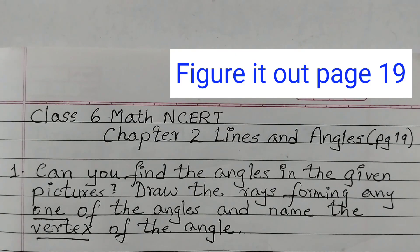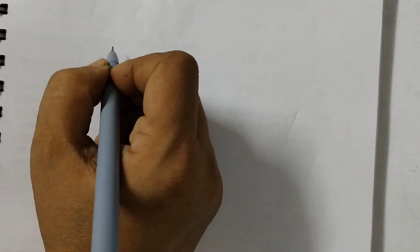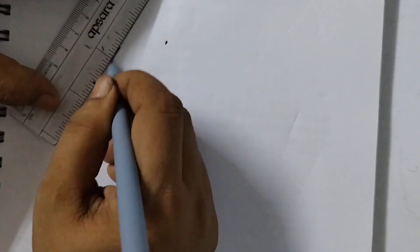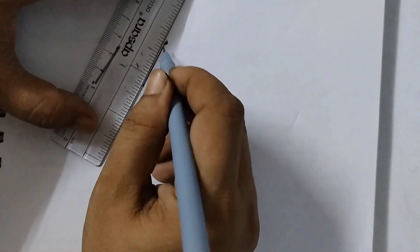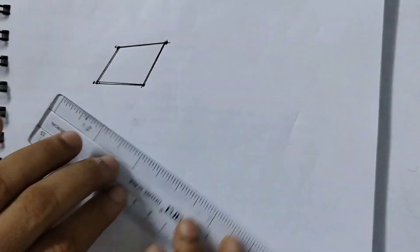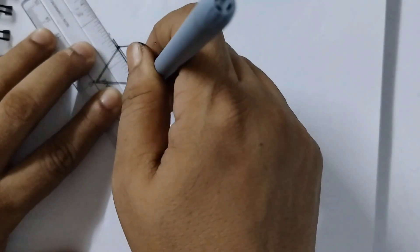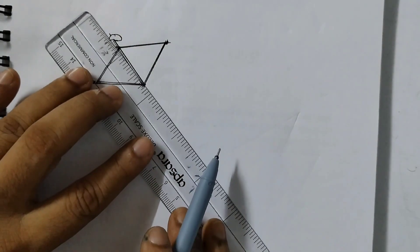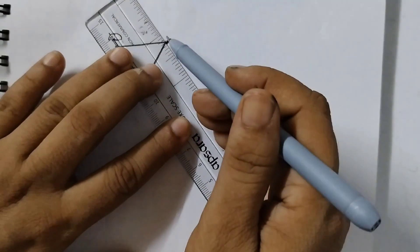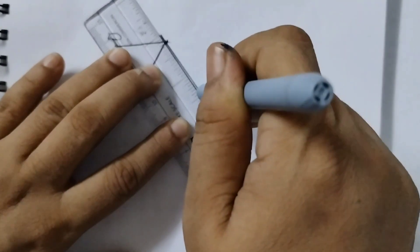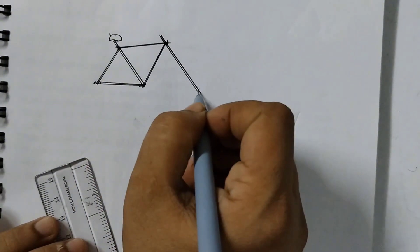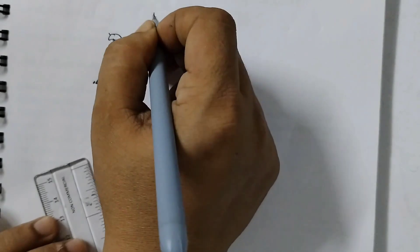Let me show you how you can draw the pictures in the notebook. The first picture is of a cycle. Take 4 points — one a little higher, then 2, 3, and 4 at the same level. Then use a scale and draw double lines like this. Next, draw another double line here and you can make a seat here. Parallel to this line, push the scale and draw one more line at the same level, then draw the handle.